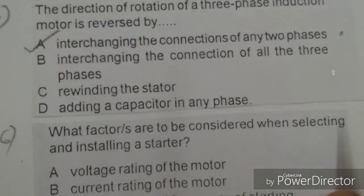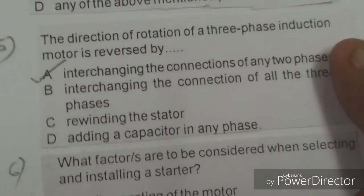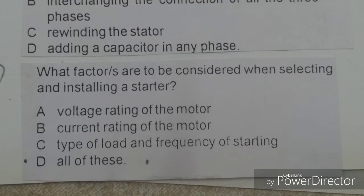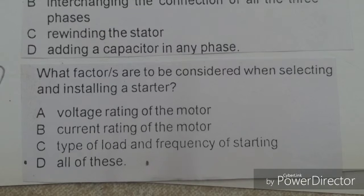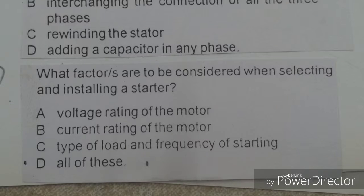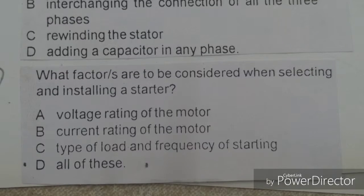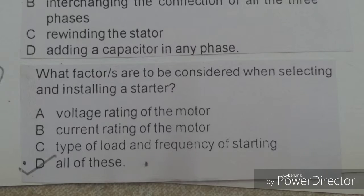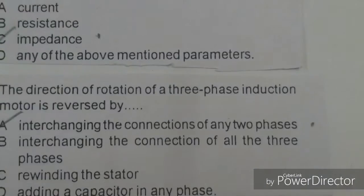Next objective: What factors are to be considered when selecting and installing a starter? Options given: voltage rating of the motor, current rating of the motor, types of load and frequency of starting, all of these. The right answer is D, all of these — voltage rating, current rating, and types of load and frequency of starting.